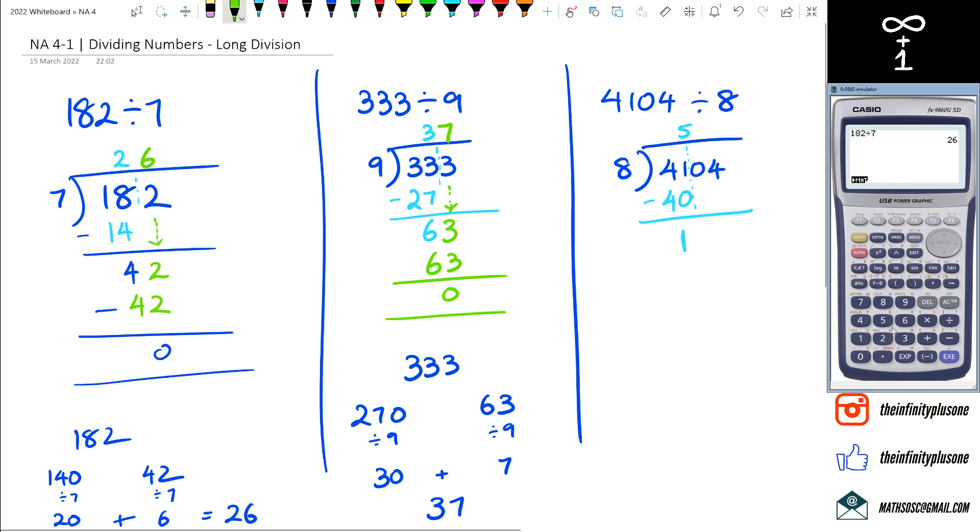And in the next line, the only thing I'm going to bring down is my 0. So I've got 10 there, which means I've got to do 8 times 1, which is equal to 8. And 10 take away 8 is 2. What's remaining next?